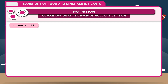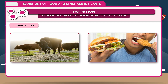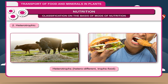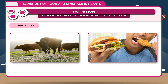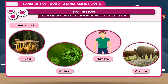Heterotrophic nutrition: The organisms which do not manufacture their own food material are called heterotrophs (hetero = different, trophic = food). They depend on other organisms for their food and are also called consumers. They include fungi, bacteria, humans and animals. The mode of nutrition of animals is called holozoic type of nutrition.